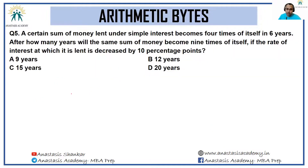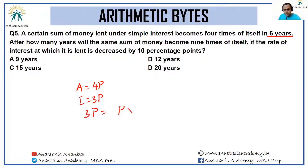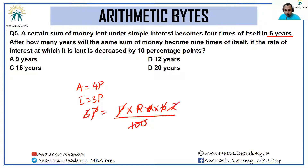Last question: A certain sum of money lent under simple interest becomes four times of itself in six years. So if the amount equals 4P, the interest earned is 3P. We have 3P = P × r × 6 / 100. P cancels, 6 and 3 cancel to give 2, and 2 and 100 cancel to give 50. So the rate of interest turns out to be 50%.